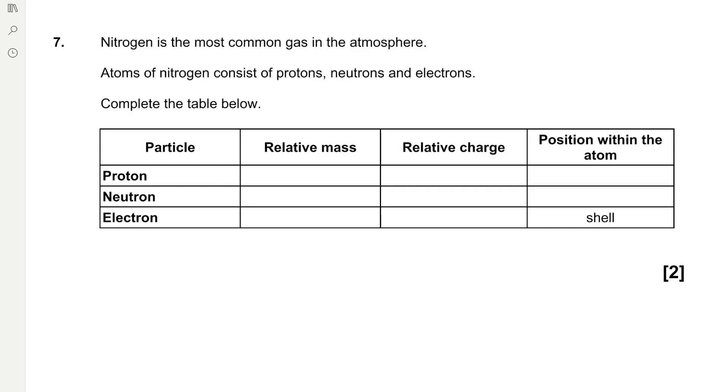Question 7: Nitrogen is the most common gas in the atmosphere. Atoms of nitrogen consist of protons, neutrons and electrons. Complete the table below. They're asking us for the relative mass, the relative charge and the positioning within the atom of each atomic particle.